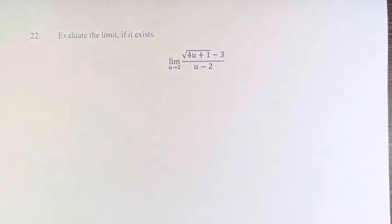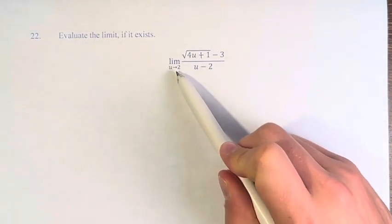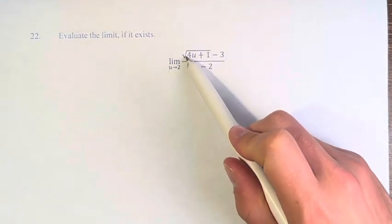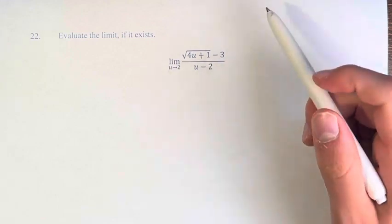Hello and welcome back to another video. In this problem we're asked to evaluate the limit if it exists, where we have the limit as u approaches 2 of the square root of 4u plus 1 minus 3 over u minus 2.